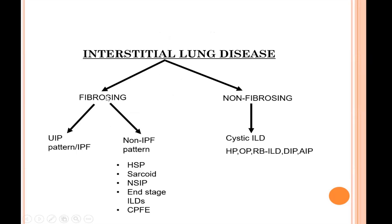Interstitial lung diseases are classified as fibrosing and non-fibrosing. In fibrosing ones, the UIP or IPF pattern must be identified and ruled out first. In non-IPF patterns, hypersensitivity pneumonitis is the most common disease in India — the most common interstitial lung disease as per the Indian registry. Next are sarcoidosis, non-specific interstitial pneumonia, combined pulmonary fibrosis and emphysema, and end-stage interstitial lung diseases. In non-fibrosing varieties we have cystic ILDs as well as smoking-related interstitial lung diseases.